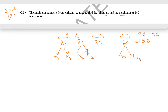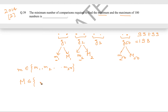After 50 comparisons we have local minimums m1, m2, ... m50 and local maximums M1, M2, ... M50. The absolute global minimum must belong to the set {m1, m2, ..., m50} and the global maximum must belong to the set {M1, M2, ..., M50}. So we need to find the global minimum and global maximum from these two lists of 50 elements each.